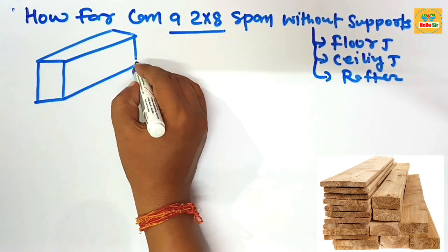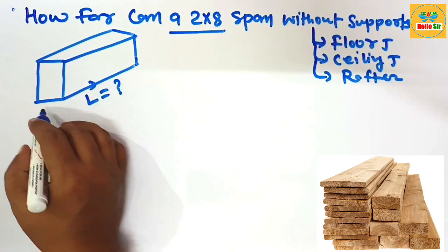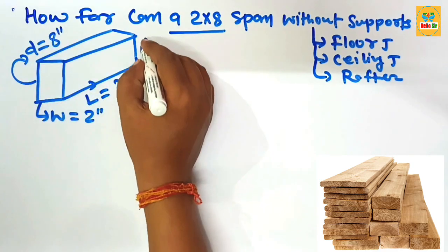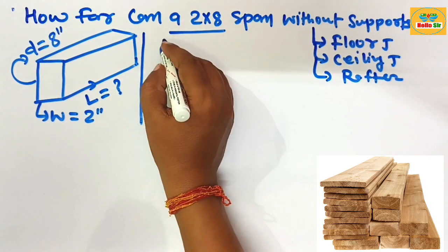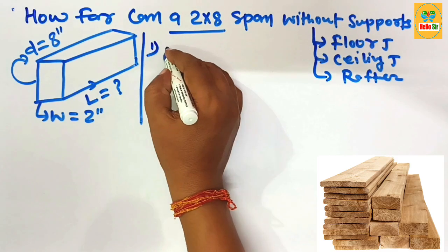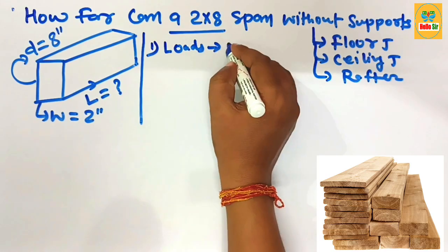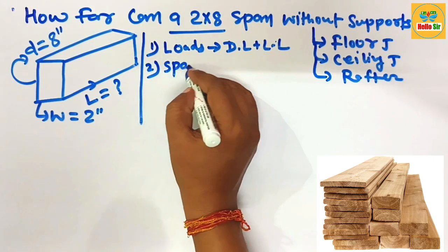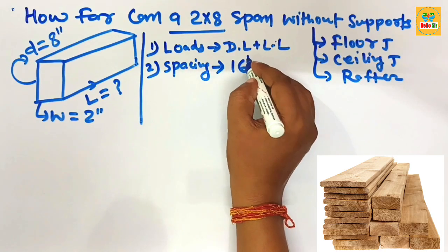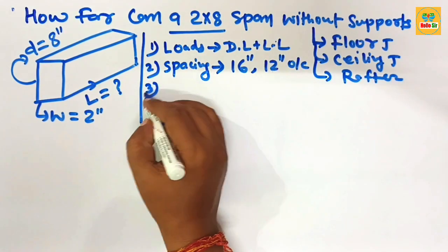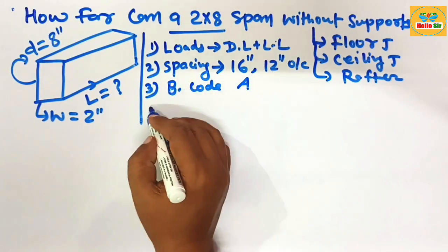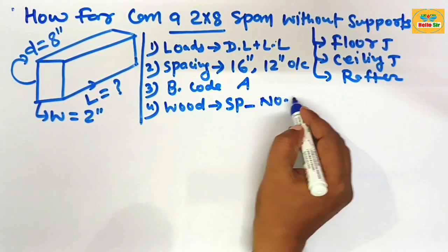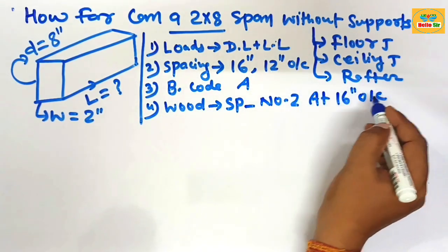The diagram shows different dimensions: the span length, the width section which is about 2 inches, and the depth section which is about 8 inches. The factors that determine span length are: load (dead load and live load), spacing between joists (16 inches on center or 12 inches on center), local building code, and wood species. Here we use southern pine number two grade at 16 inches on center.